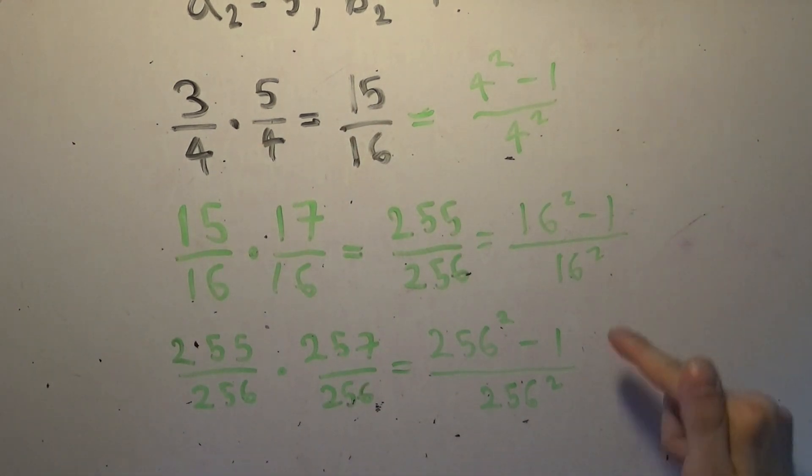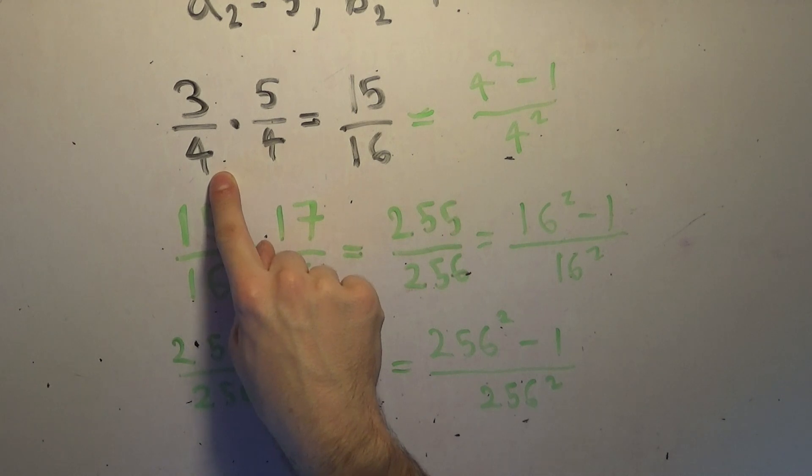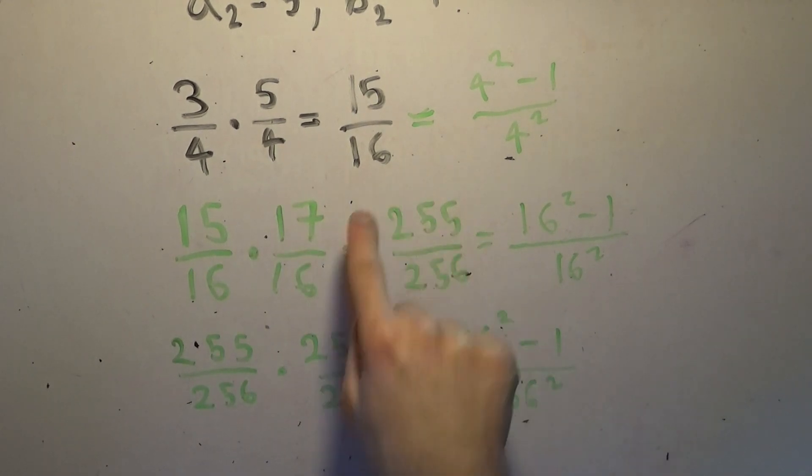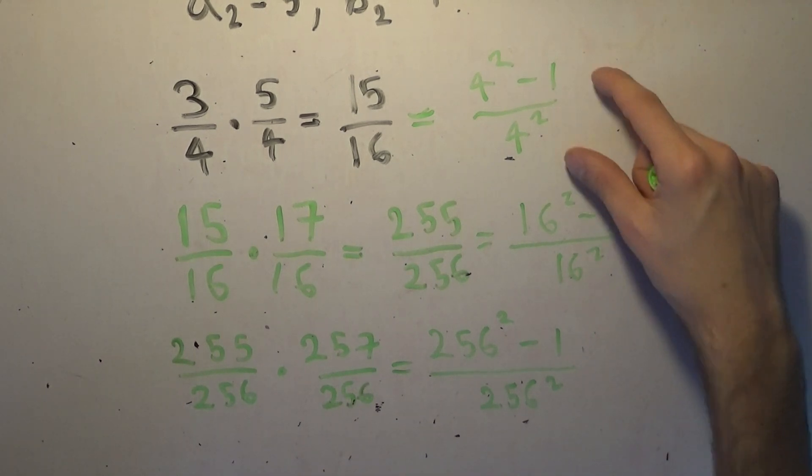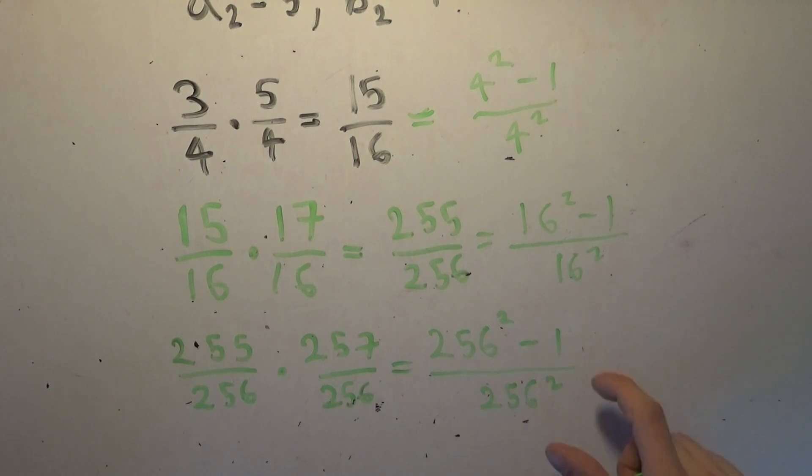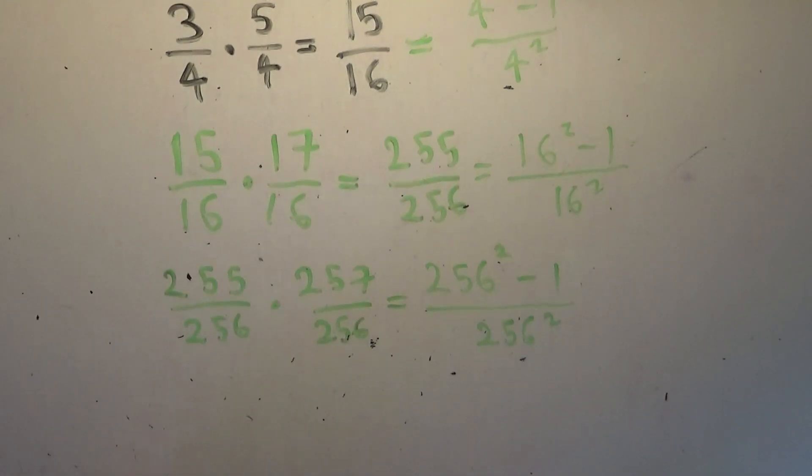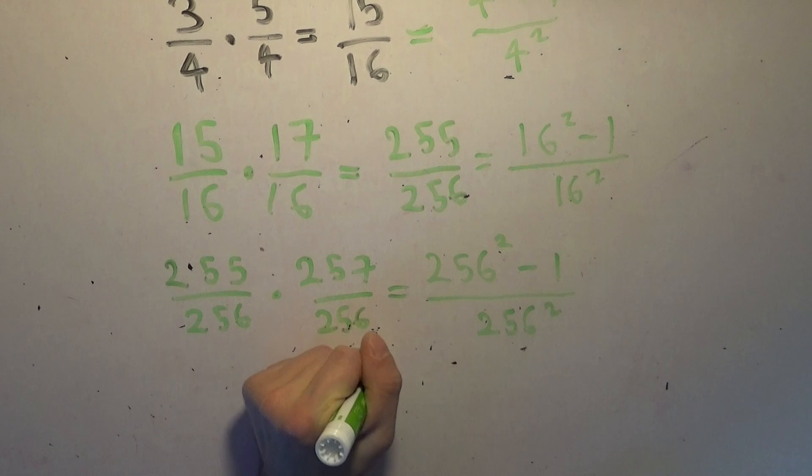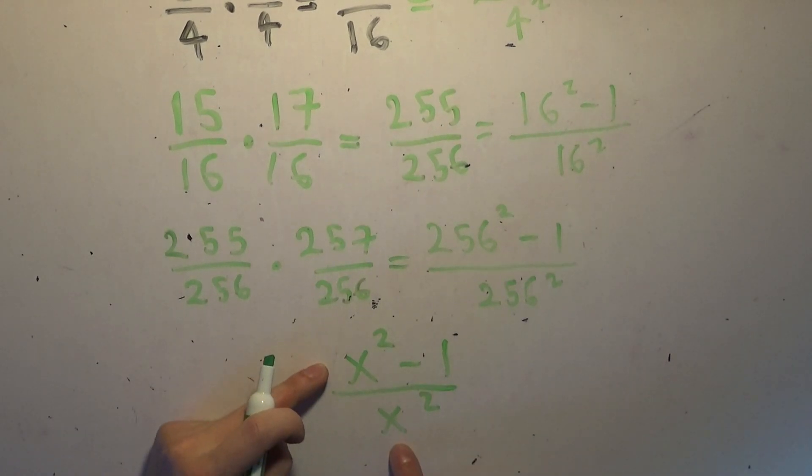And as you can see, each of these terms is actually of that form. This is 16 squared minus 1 squared over 16 squared, and this one is quite clearly 4 squared minus 1 over 4 squared. And in each successive term, you're just increasing the power of 4 in the denominator. But essentially what it is is that each partial product of this infinite product is always of the form x squared minus 1 over x squared. And what happens to this as x goes to infinity?